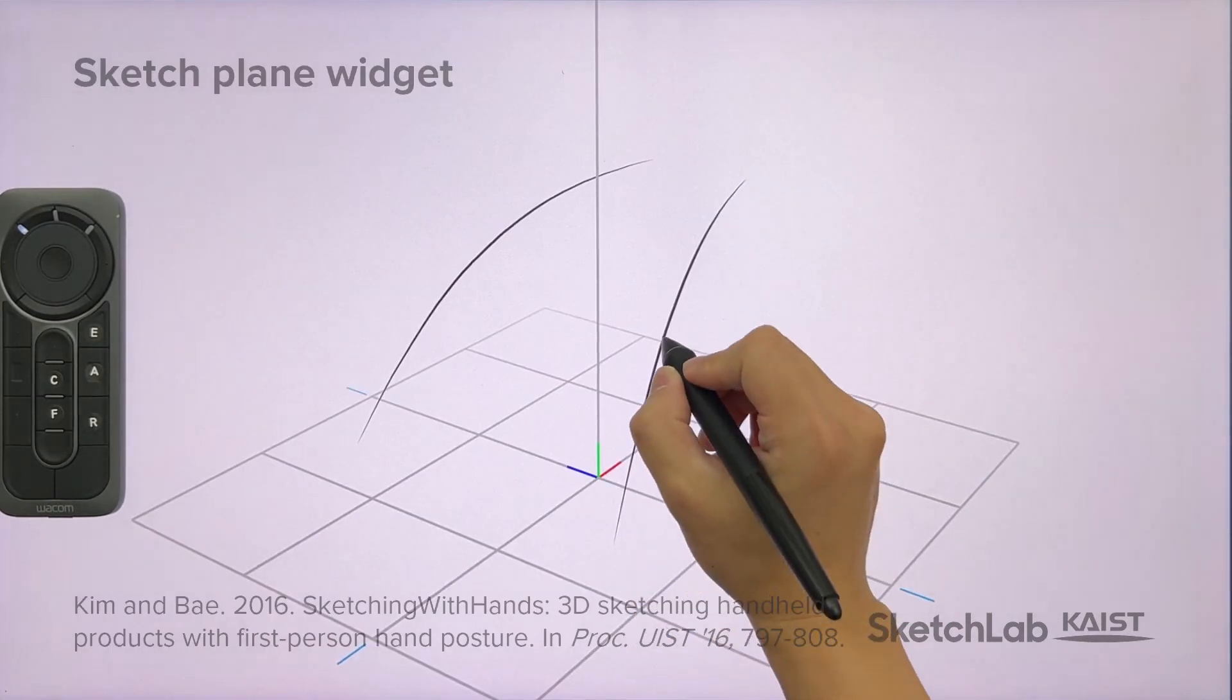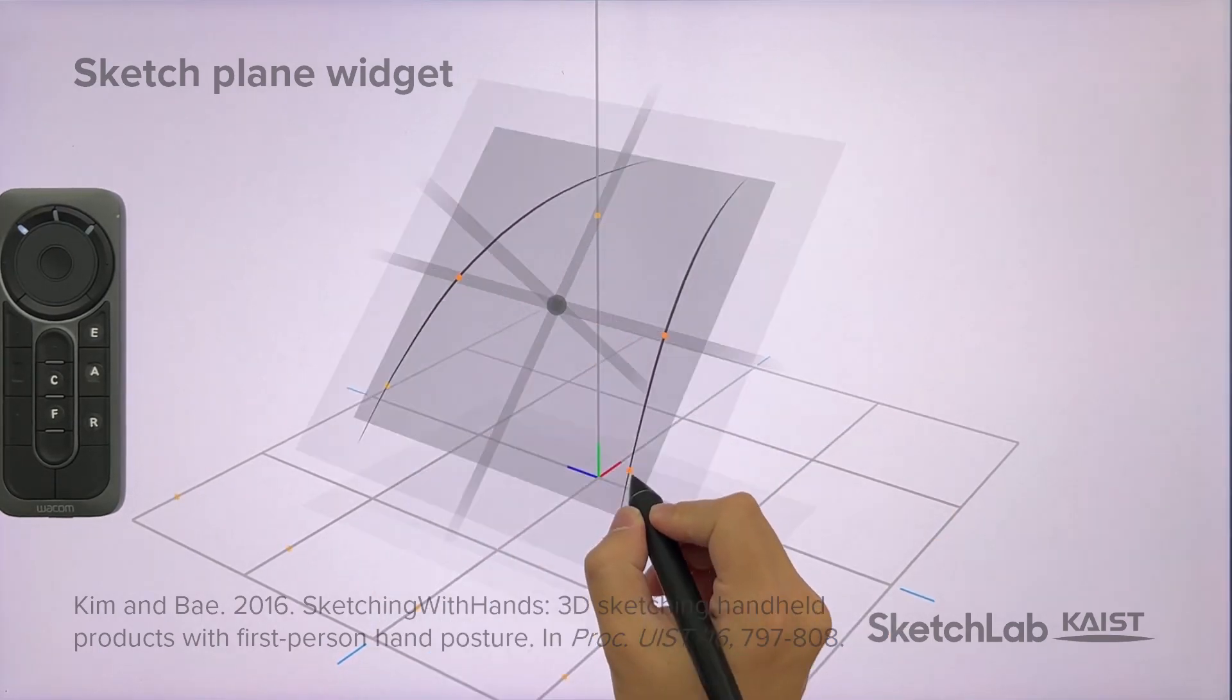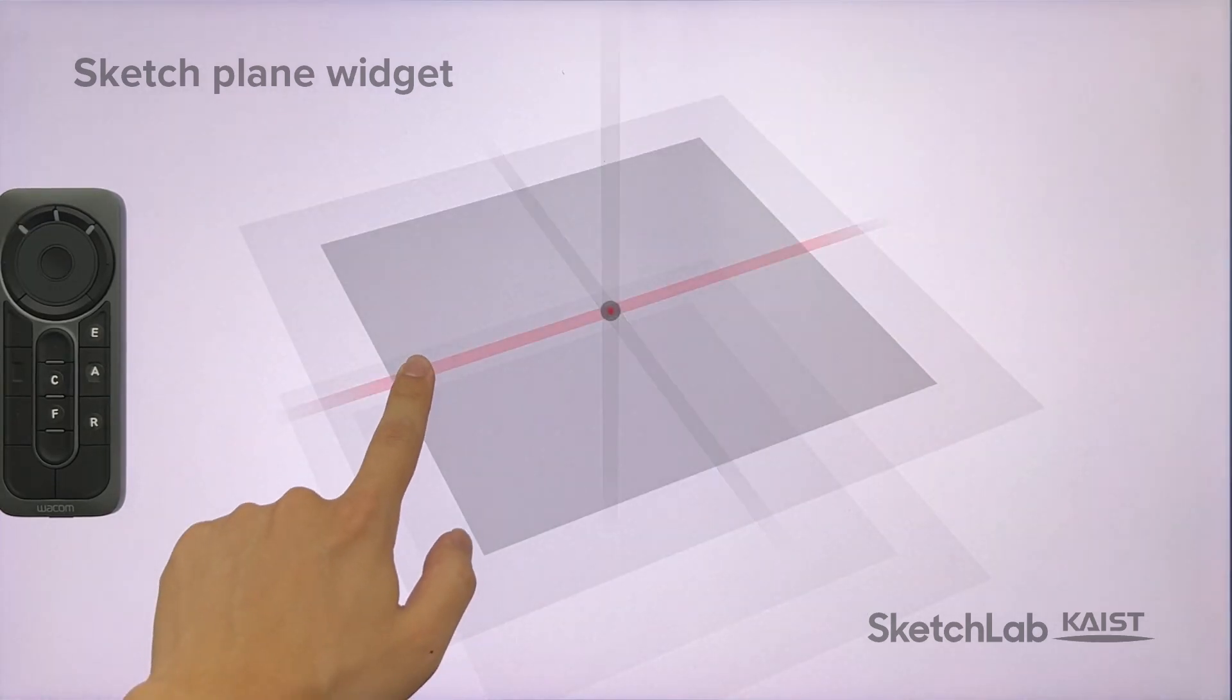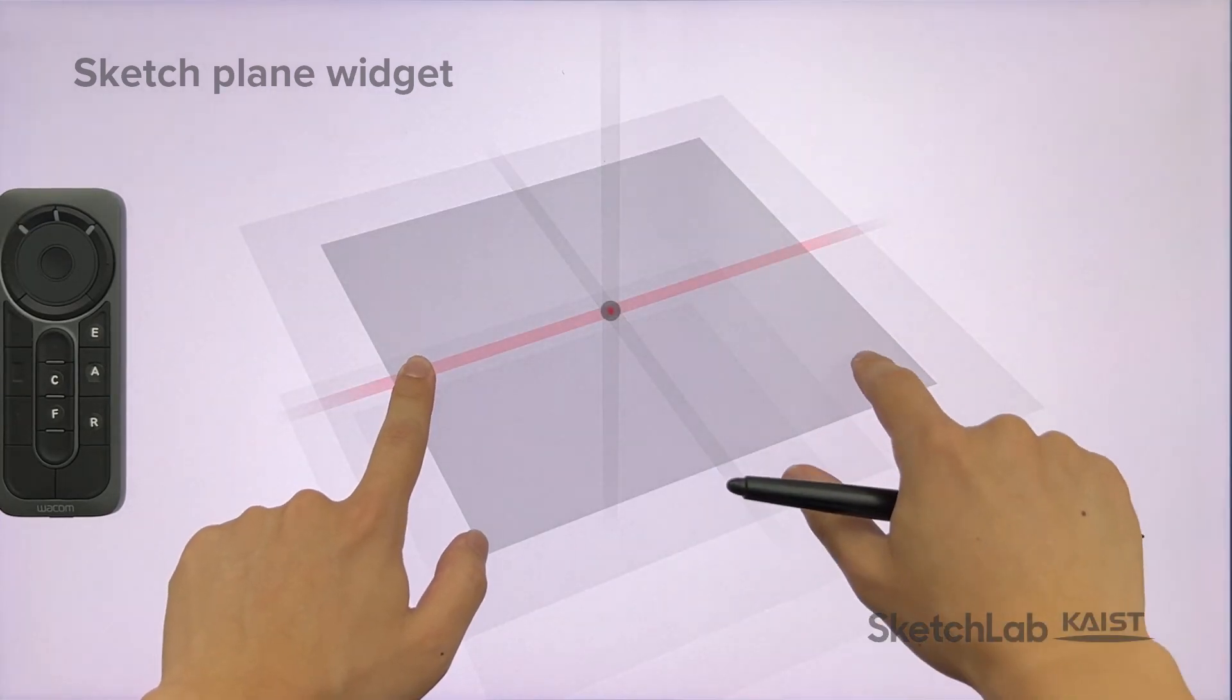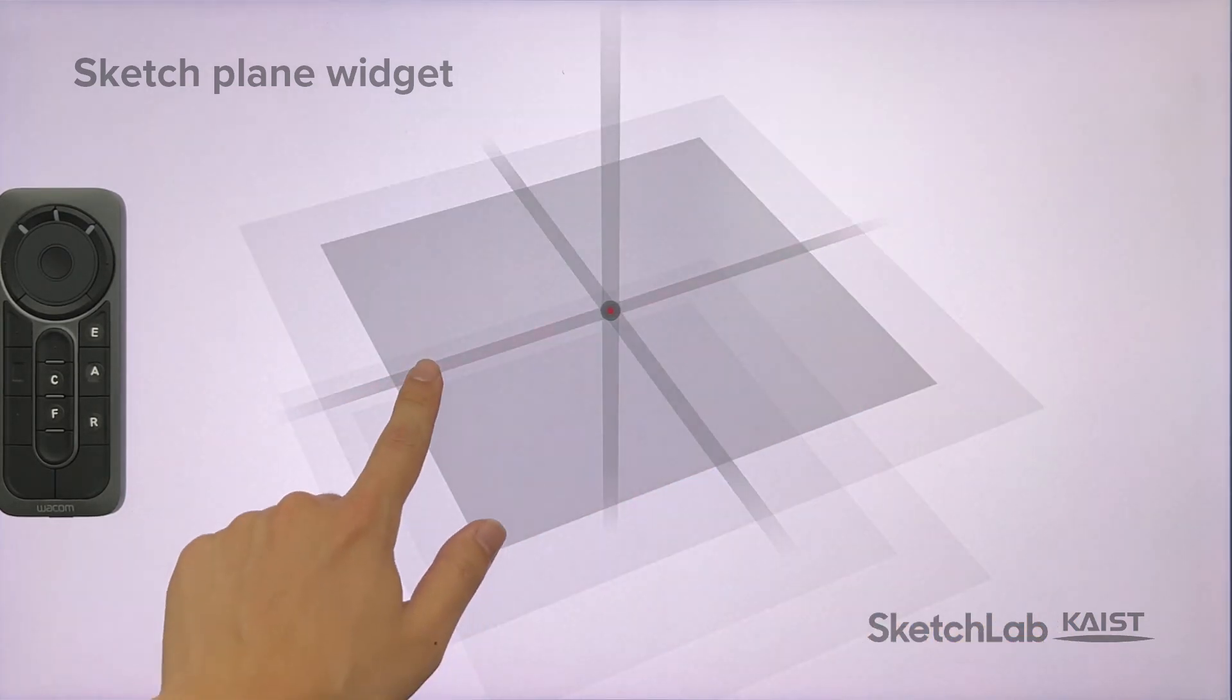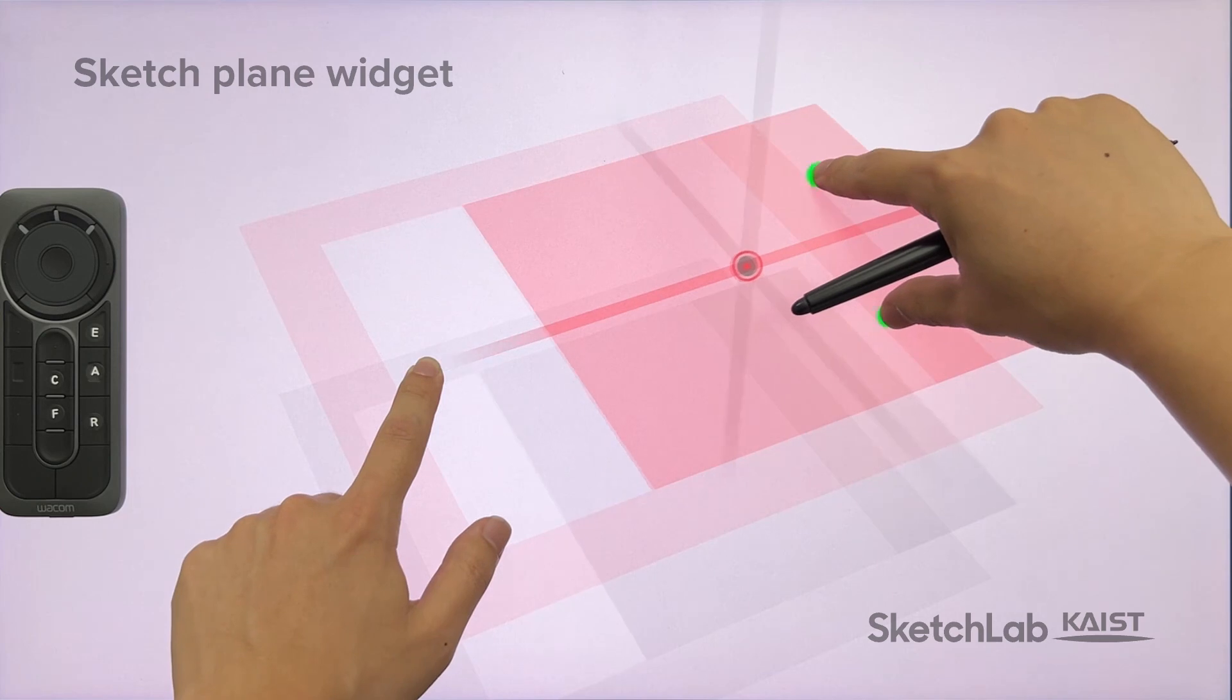In our system, by marking 1, 2, or 3 position anchors in space, the designer can create a sketch plane widget. While holding down a sketch plane axis with the left hand, with the right hand, the designer can rotate the widget about the axis with one finger, or translate the widget along the axis with two fingers.